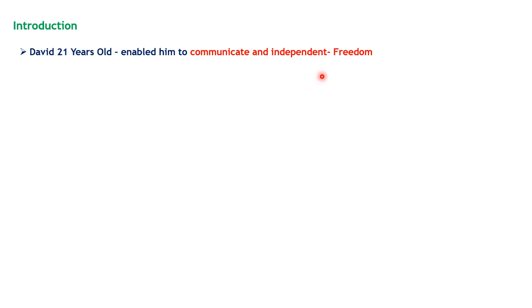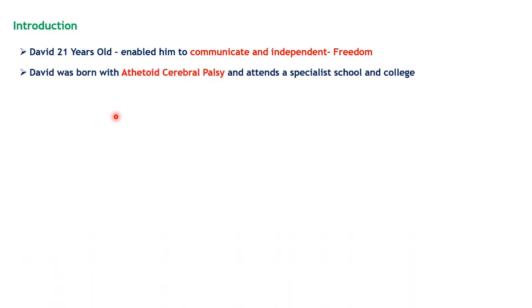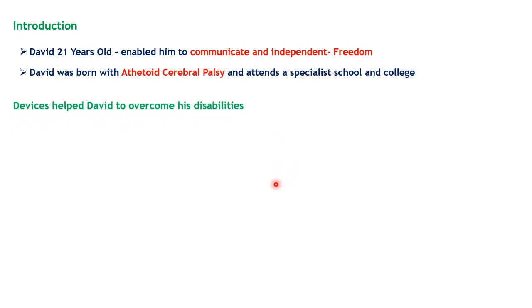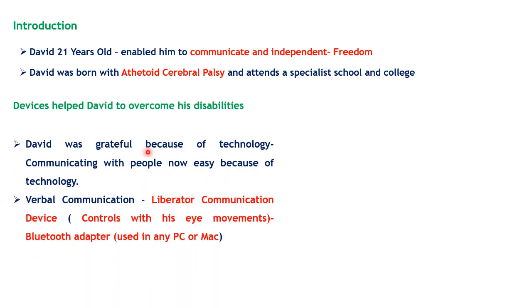Why does David feel technology is so important? David was born with athetoid cerebral palsy, which makes it very difficult for him to speak or to move from one place to another. Because of the technology and devices he now uses, it has helped him communicate with people and not depend on someone else for work. He feels so free being independent. He also attends a specialist school and college because he wants to work hard and do a lot of activities.